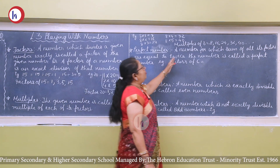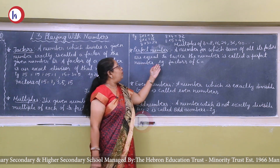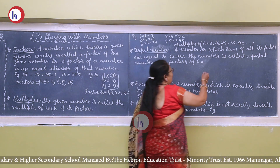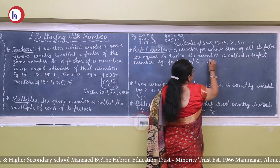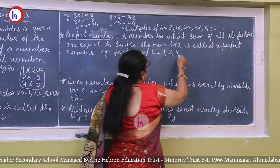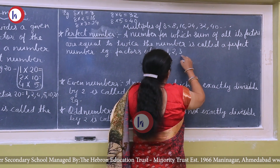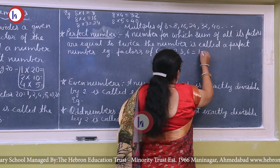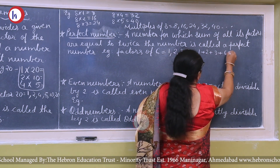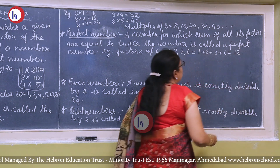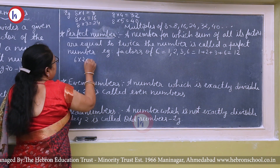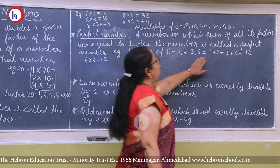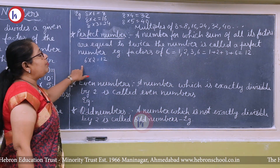Next we come to the perfect number. A number for which the sum of all its factors is equal to twice the number is called a perfect number. For example, the factors of 6 are 1, 2, 3, and 6. Adding them: 1 + 2 + 3 + 6 = 12. And 6 × 2 = 12, which is double the given number. So 6 is a perfect number.